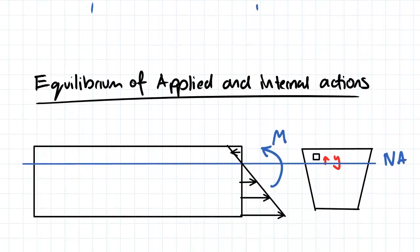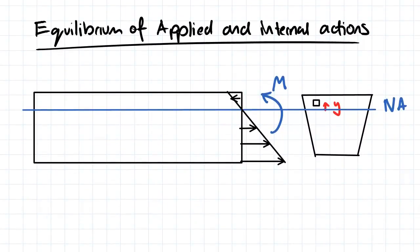So we want to derive equations for the first moment of area and the second moment of area. And the way we're going to do that is we're going to look at the equilibrium of a beam here and the stress applied to it when a moment has been applied.